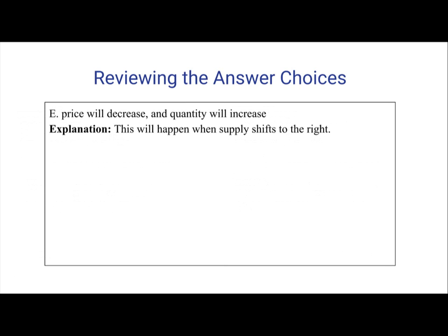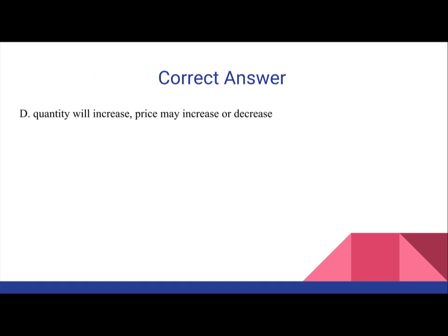Now E: Price will decrease and quantity will increase. This will happen when the supply curve shifts to the right, but the demand curve stays in the same place — there is no shift in demand. Therefore, this answer is incorrect. So the correct answer is D: Quantity will increase, and price may increase or decrease.